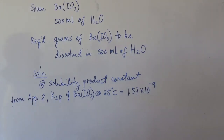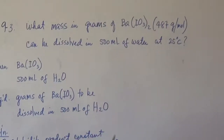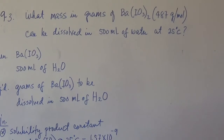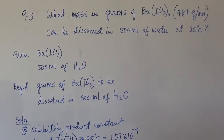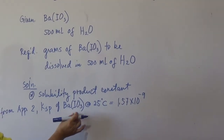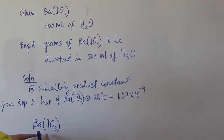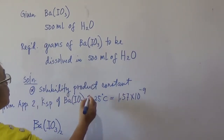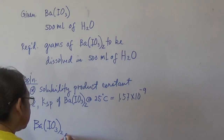Appendix 2 lists the different solubility product constants of different solids. We have barium iodate here. We are asked to determine the amount of barium iodate in grams that will be dissolved in 500 ml of water at 25 degrees Celsius. So if you have 500 ml of water, what is the amount of barium iodate that can be dissolved? The state of barium iodate is solid.